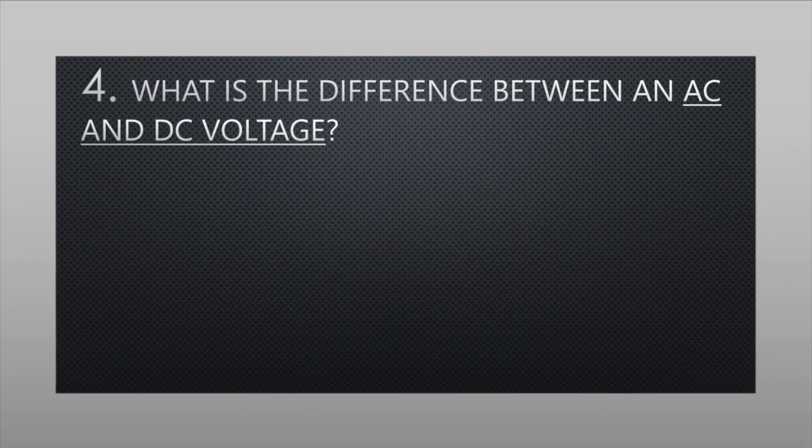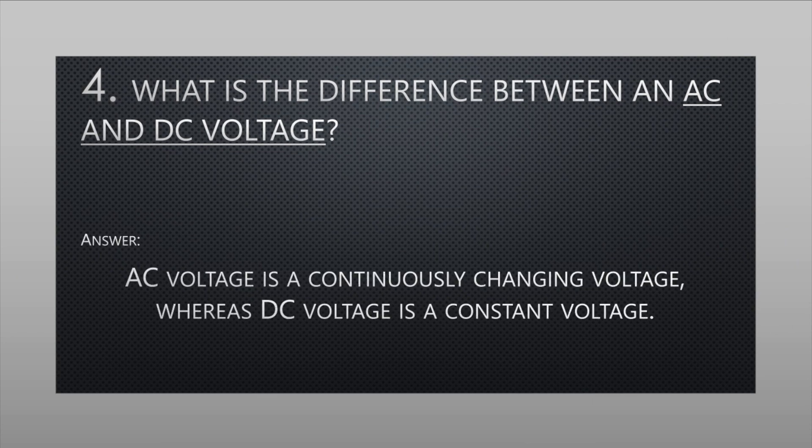What is the difference between an AC and DC voltage? AC voltage is a continuously changing voltage, whereas DC voltage is a constant voltage.